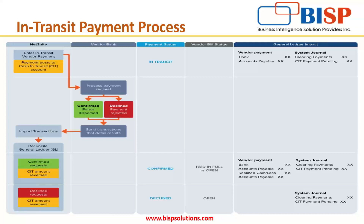This is the proper flow for in-transit payment. When the in-transit payment is entered, the amount is cross-posted to the cash in-transit account. Looking at the GL impact, system journals are created where the clearing payments account is debited and the clearing payment pending account is credited.